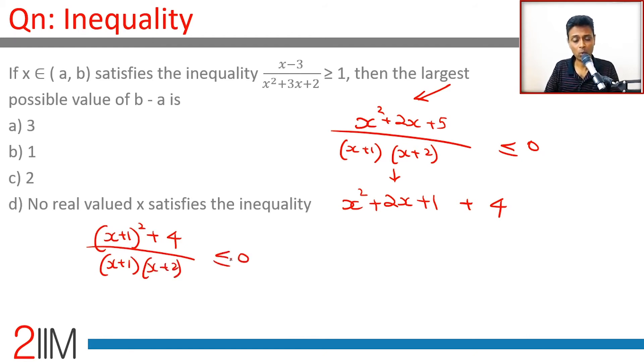So [(x + 1)² + 4]/(x + 1)(x + 2) ≤ 0. Why does this help? The numerator cannot be negative—it is a square plus 4, it is greater than or equal to 4. So a positive expression divided by (x + 1)(x + 2) is ≤ 0.